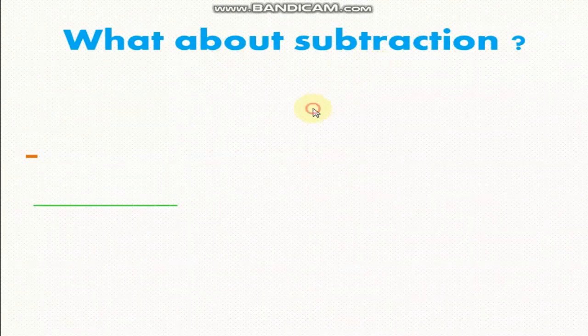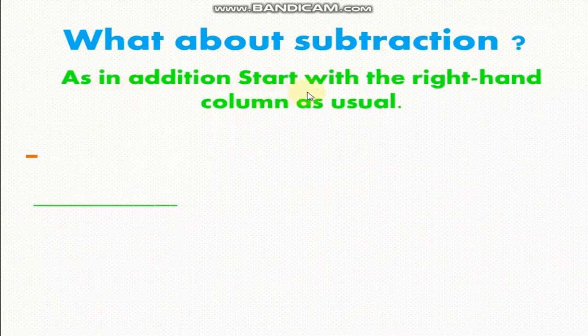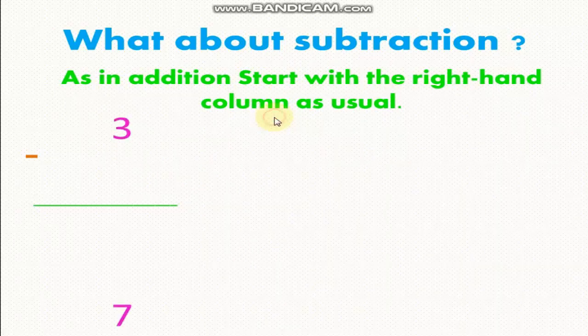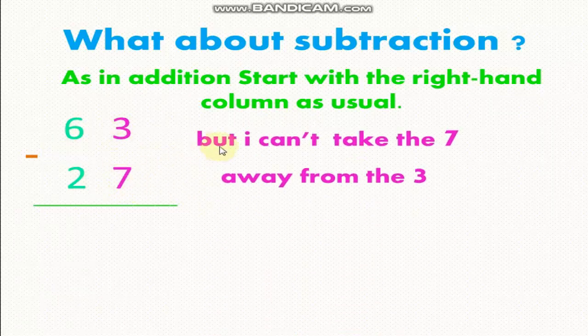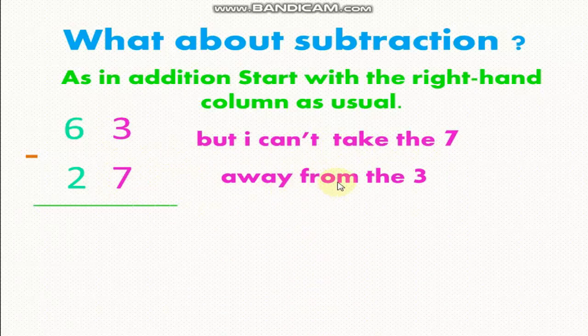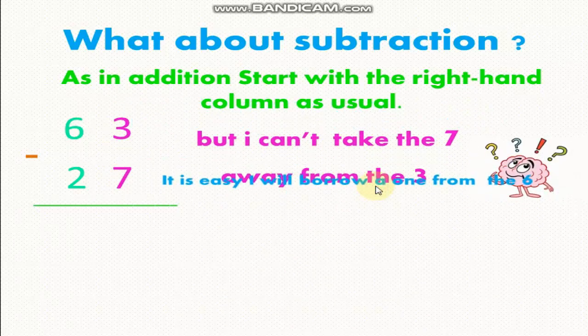What about subtraction? As in addition, start with the right-hand column as usual. 63 minus 27. 3 minus 7. But I can't take the 7 away from the 3. How can I solve it?